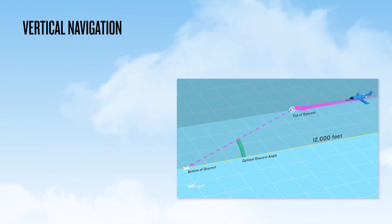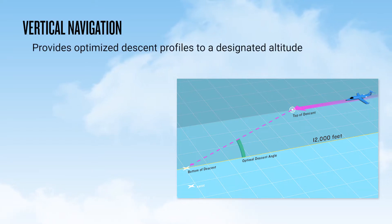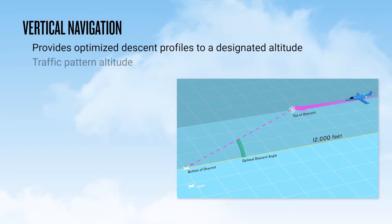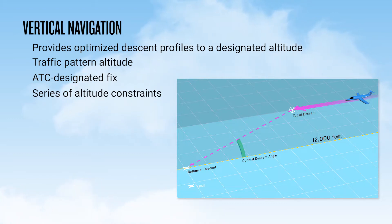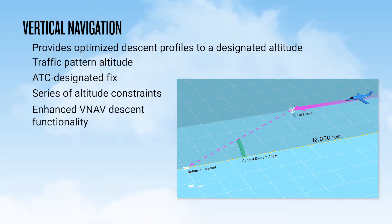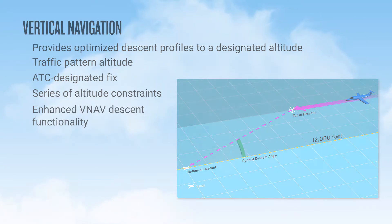Vertical Navigation, or VNAV, is a great resource that provides for optimized descent profiles to a designated altitude, such as a traffic pattern altitude, a fix designated by ATC, or to a series of altitude constraints such as on an arrival procedure. This video covers the enhanced descent VNAV functionality found in the G1000 NXI.